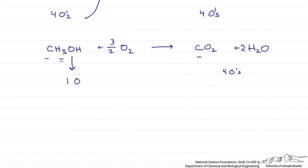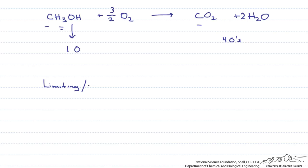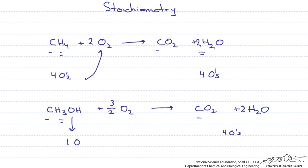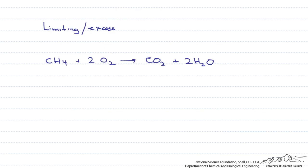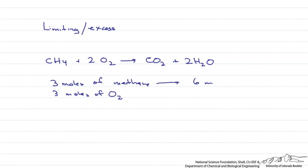Now let's look at limiting and excess reactants. If we look at our first reaction up here, from the stoichiometry, for every one mole of methane we're going to need two moles of oxygen. Let's say we have three moles of methane and three moles of oxygen. Which is limiting? Well, for three moles of methane we would need six moles of O₂ because of the stoichiometry of the reaction. However, we only have three moles of oxygen, so it's the limiting reactant.